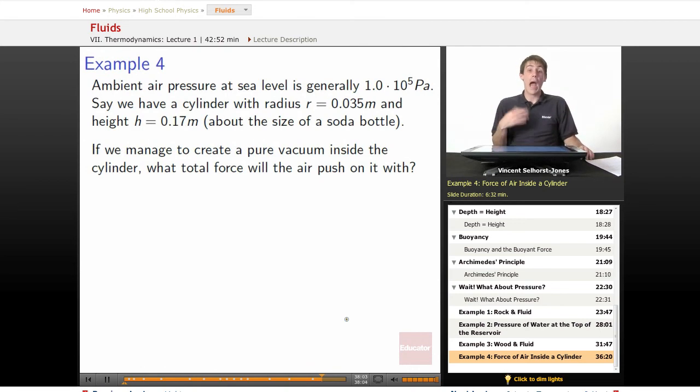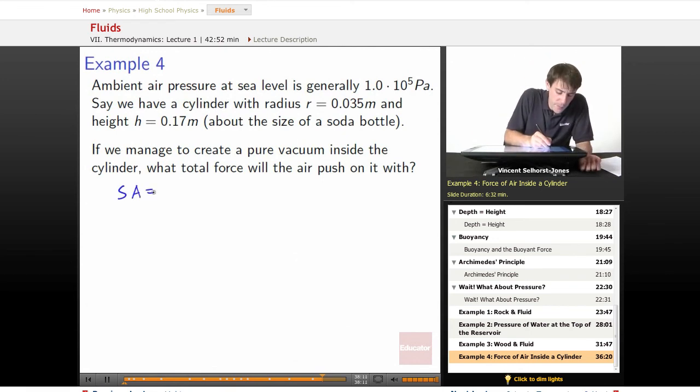So first we have to figure out how much area the air pressure has to push with. We need to figure out what's the surface area of that cylinder. The two ends of our cylinder: each end is πr². How many ends do we have? Well, we've got two ends, so 2πr²,